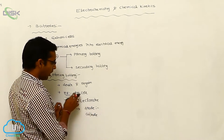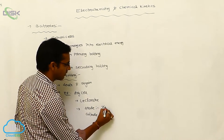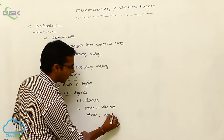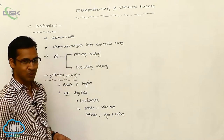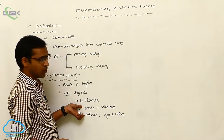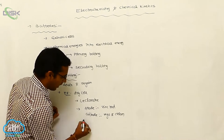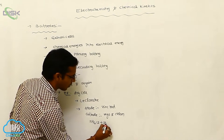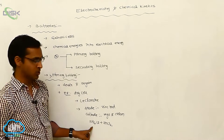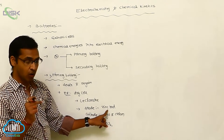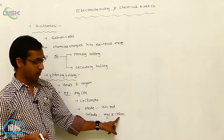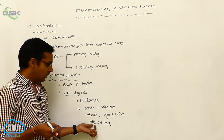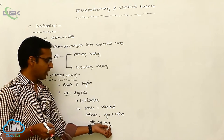In the primary battery dry cell, the anode is a zinc rod. The cathode is manganese oxide and carbon powder. The space between the electrodes is filled by an electrolytic solution of ammonium chloride and zinc chloride.